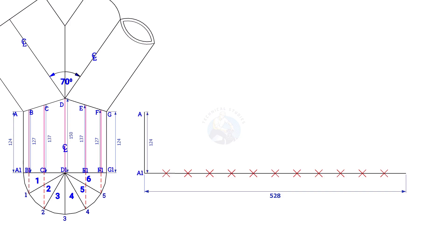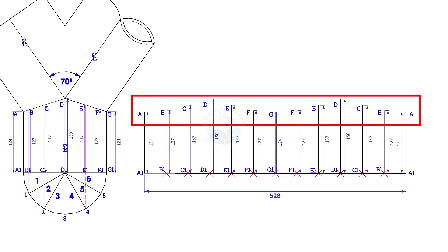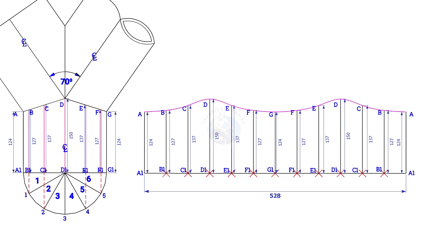Similarly, draw lines B, B1, C, C1, etc. Draw a smooth curve starting from A to A. You may need to add or reduce additional length to achieve the required length of the header.